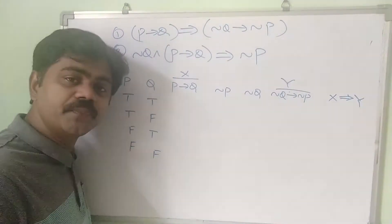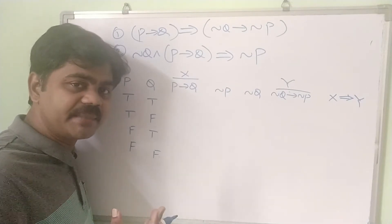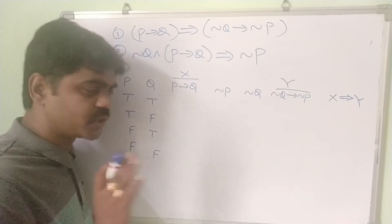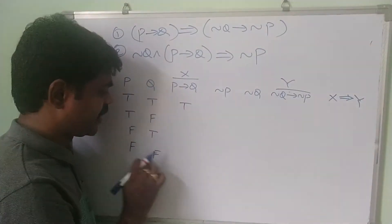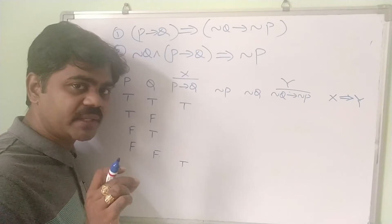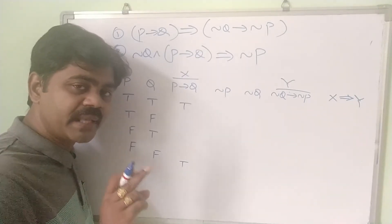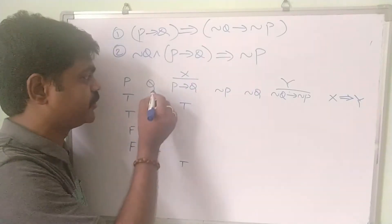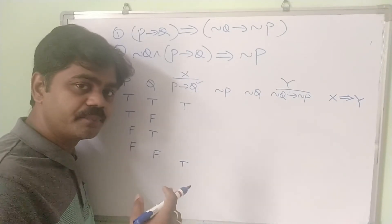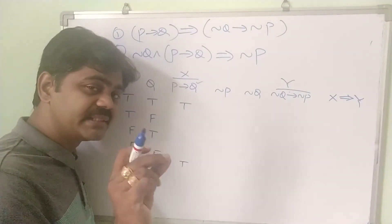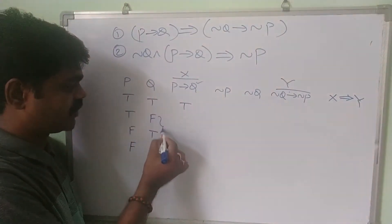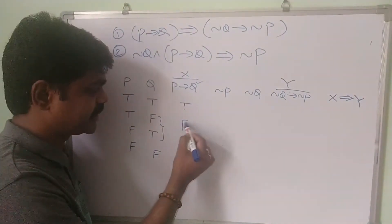For p implies q: in TT write true, in FF also write true — that's a shortcut. And after the arrow mark we have q, so write the truth values of q: false and true. So for p implies q: true, false, true, true.